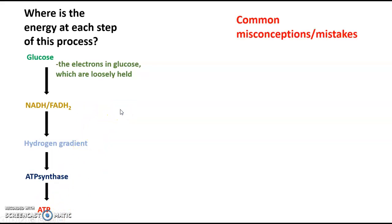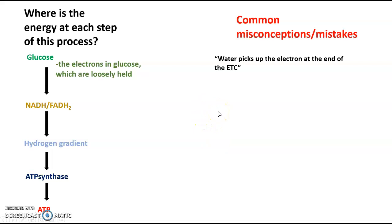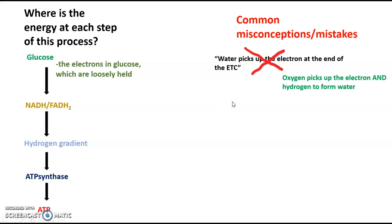I want to cover some common misconceptions and mistakes students make every year. One I see written on tests and quizzes is: 'Water picks up the electron at the end of the electron transport chain' — and this is incorrect. Oxygen picks up the electron and also picks up a hydrogen at the same time, and that forms water. So oxygen picks up the electron, and the product is water. Water does not pick up the electron.